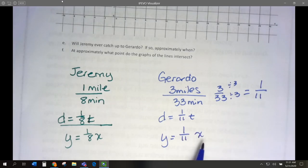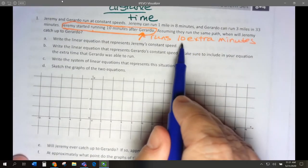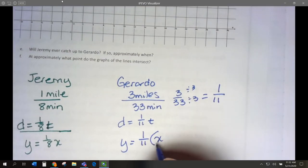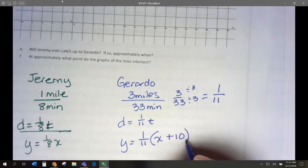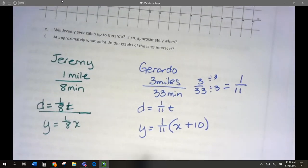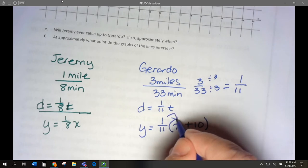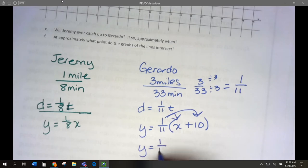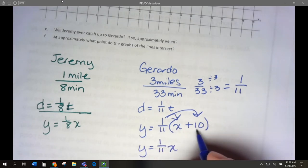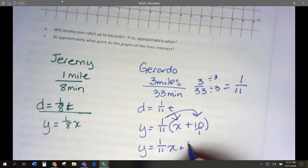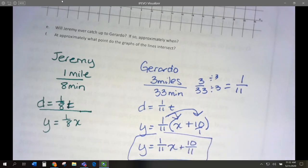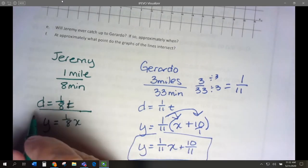So Gerardo's equation, his distance is going to be 1 over 11 times our time, or y equals 1 11th times x. But remember, he also runs 10 extra minutes, doesn't he? So because he's doing it, our minutes plus the 10. So let's do our distributive property here. And we're going to get y equals 1 over 11 x. Multiply that out. And 1 over 11 times 10, put that over 1, right? And we get 10 elevenths. So this is Gerardo and this is Jeremy.